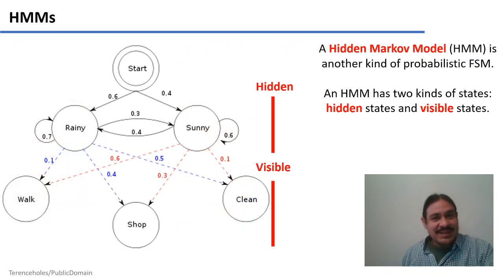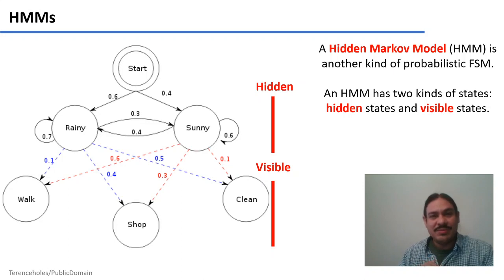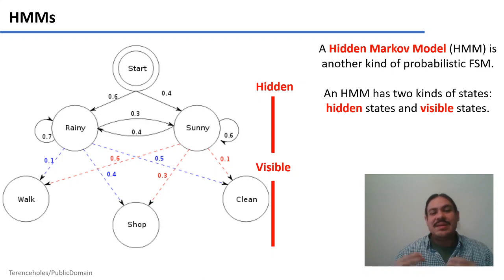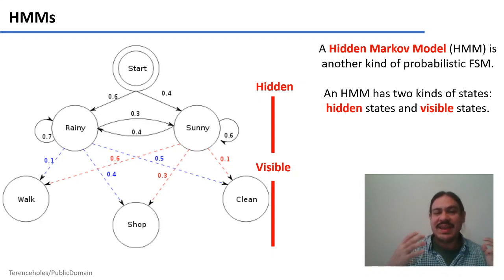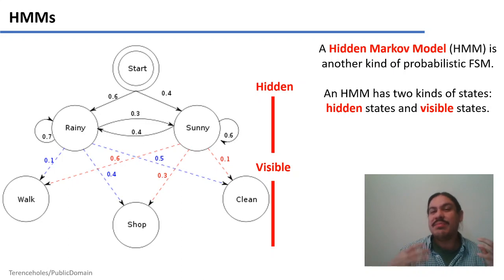Let's take it up a notch and look at a hidden Markov model, which is another type of probabilistic finite state machine. In this kind of model, you have two kinds of states: hidden and visible. Let's look at what that means.